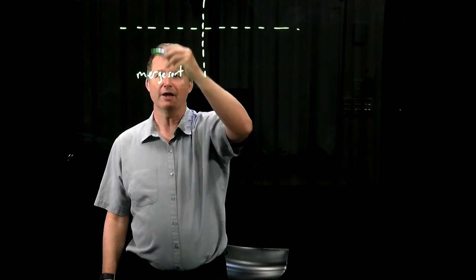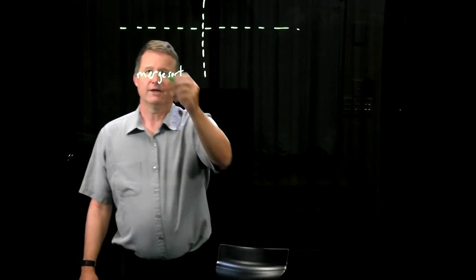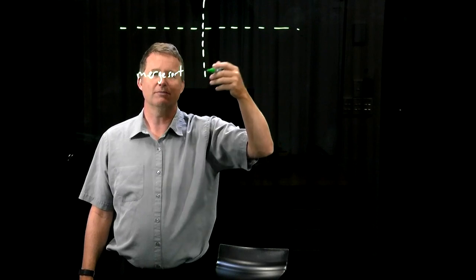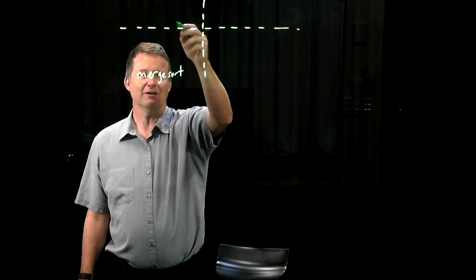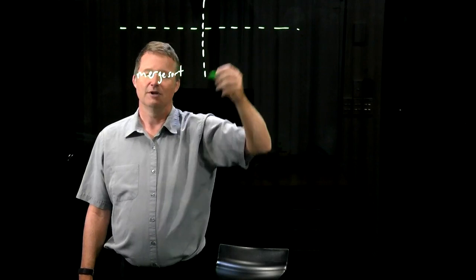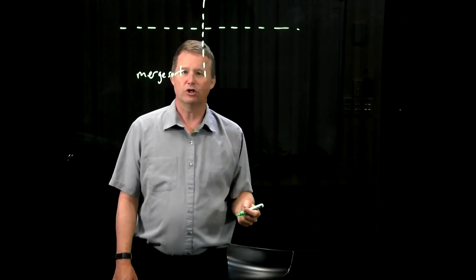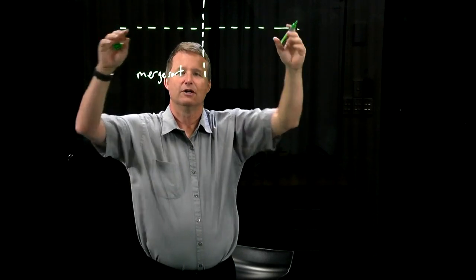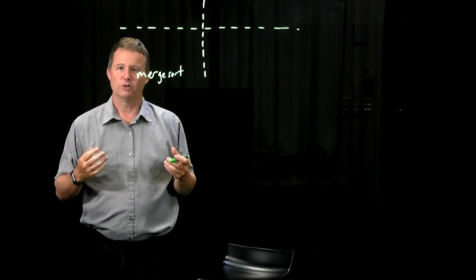And it splits it right down the middle and recursively sorts the left and the right. Then everything in here is sorted, everything in here is sorted, but there's still some unsortedness of things in here relative to things in here. And some clever work is required in order to merge the two sorted lists that you have back into one big sorted list. And that's really where all the work of merge sort is.